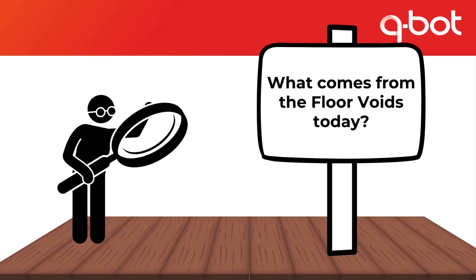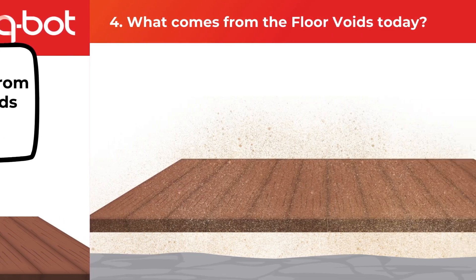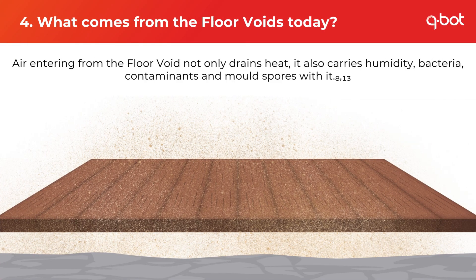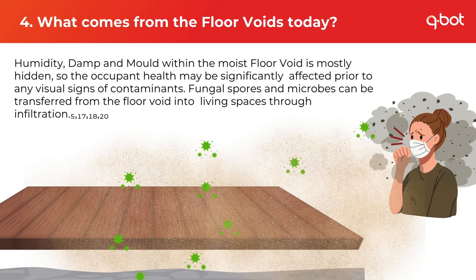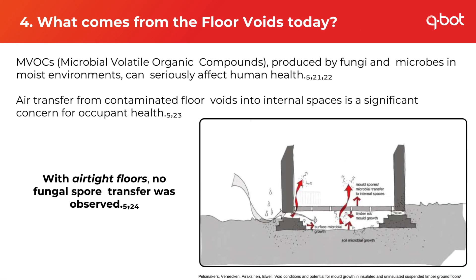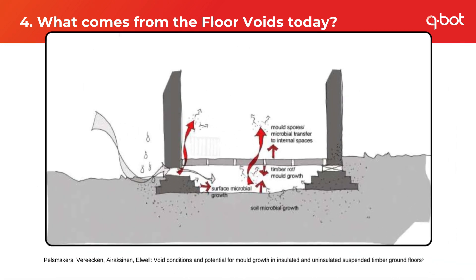The air entering from the floor void not only drains heat but also carries all kinds of contaminants. Humidity, damp and mould within the moist floor void are mostly hidden, so occupant health may be significantly affected prior to any visual signs. Fungal spores and microbes can be transferred from the floor void into the living space through infiltration. The volatile organic compounds produced by fungi and microbes can seriously affect human health. It's important to note that with airtight floors, no fungal spore transfer was observed.